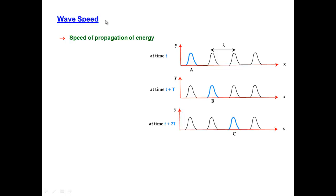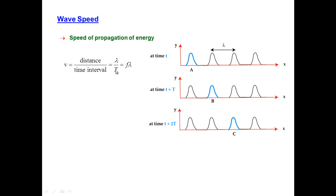What about wave speed? The speed of the wave is the same as the speed of the propagation of its energy or disturbance. Looking at a pulse train, the peak at time t is at point A; that same peak at time t plus one period has moved to point B, and on to point C. The speed is the distance divided by the time interval. The distance traveled from point A to point B is simply the wavelength, so in a time T — one period — the wave has traveled a distance equal to one wavelength.